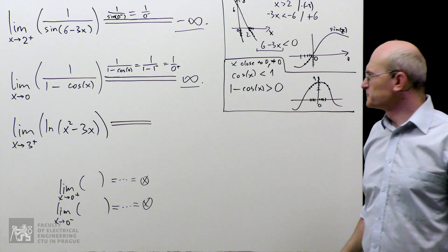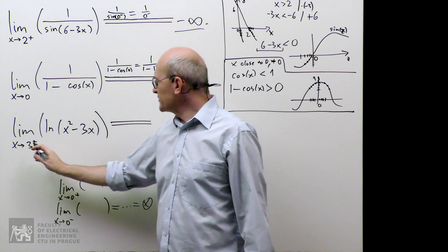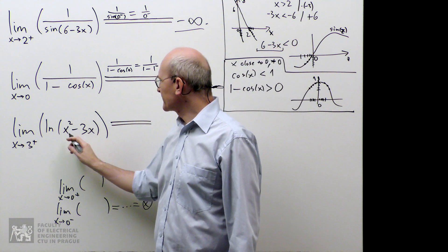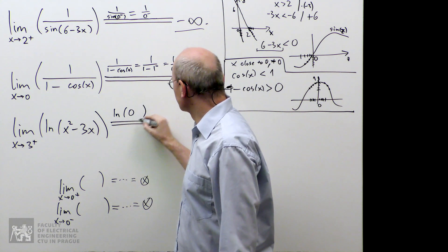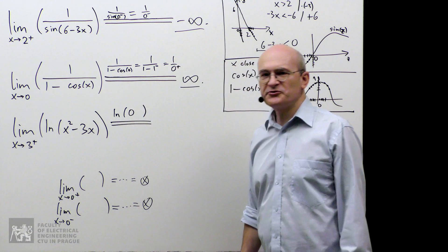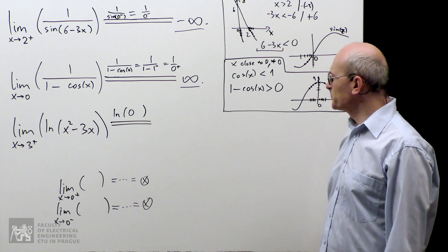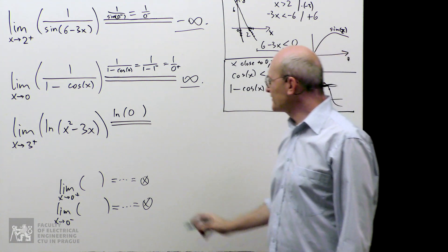Let's move to the third one. I take number 3 and I substitute here and I get 9 minus 9. So, it's logarithm of 0. Which is nonsense, of course. So, we need some information about one-sidedness of this 0.